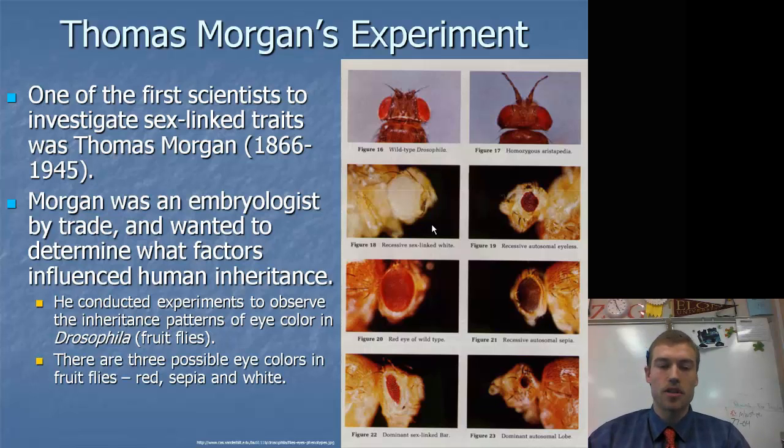Specifically he was looking at eye colors. There are three different colors: red, sepia, and white. Red is the wild type. Wild type just means that that's the dominant normal trait, what you find in most of them. It doesn't necessarily always have to be dominant, but it's what you find in most of the organisms. Then there is a sex-linked white trait and a recessive autosomal trait called sepia. Red is dominant to both sepia and sepia is dominant to white.